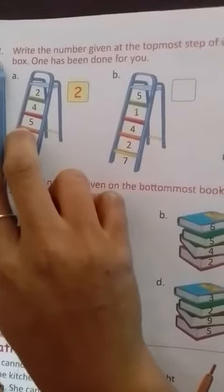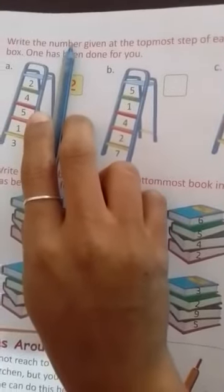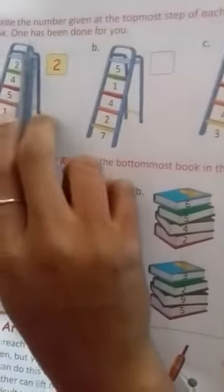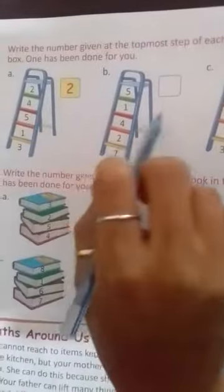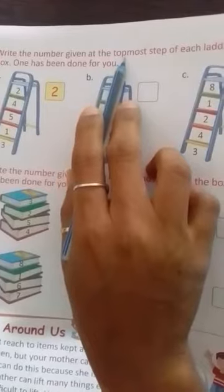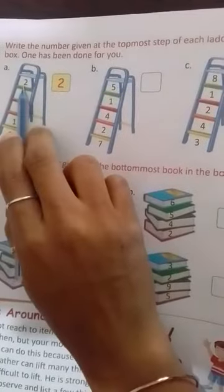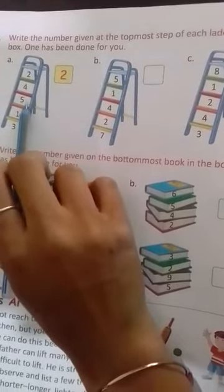Let's start our question number 2. Write the number given at the topmost step of each ladder in the box. One has been done for you. Means, in the ladder pictures shown here, what do you have to do? Topmost means the first number, the one that is complete for you, it's done.